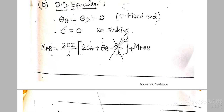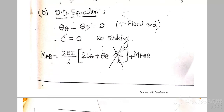There is no sinking — no settlement value is given in the problem — so delta equals zero. You can directly use the slope deflection equation. The derived equation is: moment AB = (2EI / L) × (2·theta_A + theta_B − 3·delta / L) + fixed end moment AB. Since delta equals zero, that entire term is zero.